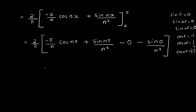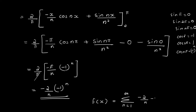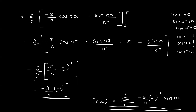That gives us 2 by pi times pi, pi cancels, giving bn equal to minus 2 by n times minus 1 raised to n. Therefore, f of x equals summation n equal to 1 to infinity, bn sin nx, where bn equals minus 2 by n times minus 1 raised to n.